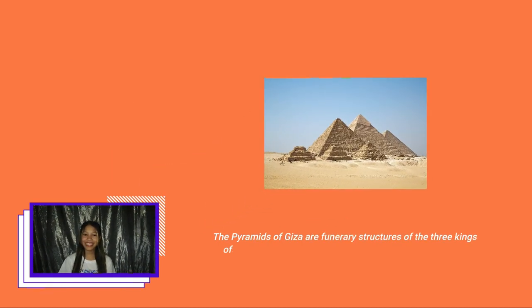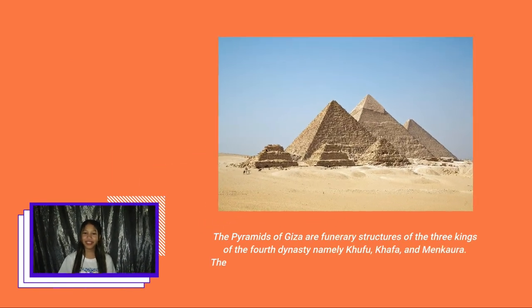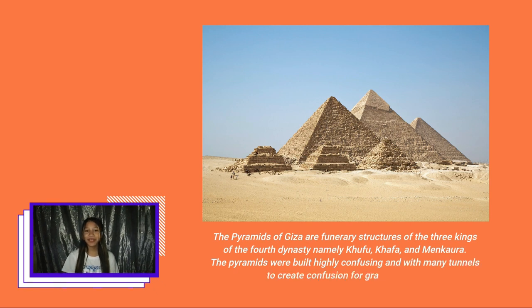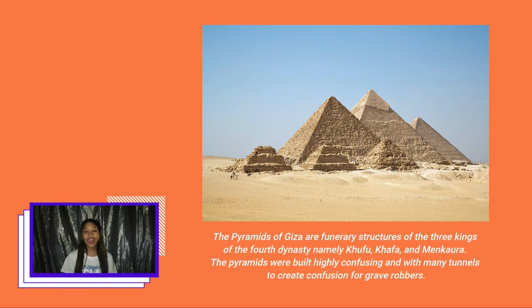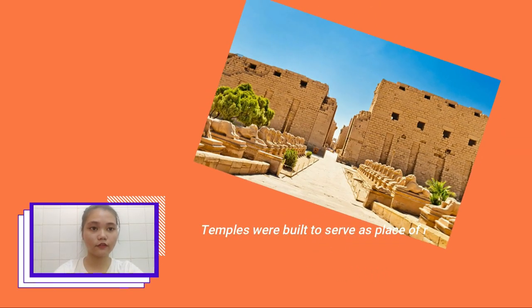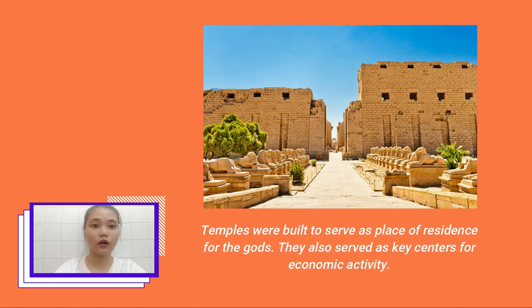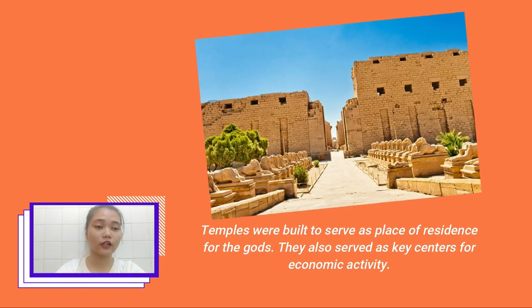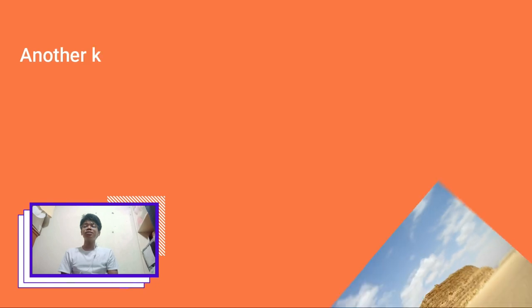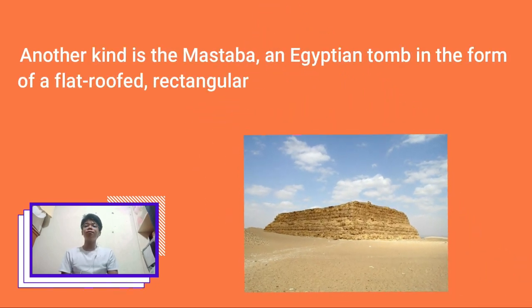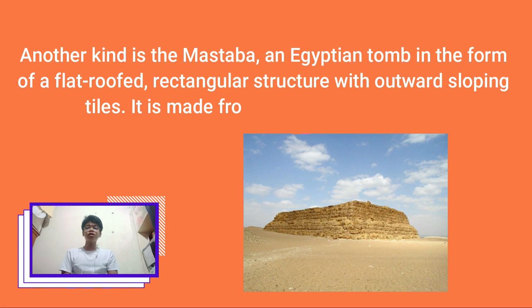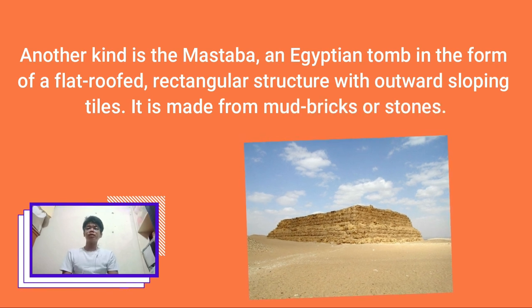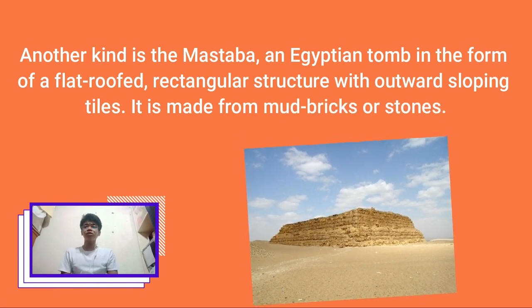The Pyramids of Giza are funerary structures of the three kings of the 4th Dynasty, namely Khufu, Khafre, and Menkaure. The pyramids were built with many tunnels to create confusion for grave robbers. Temples were built to serve as places of residence for the gods and as key centers for economic activity. The other kind is the mastaba — an Egyptian tomb in the form of a flat-roofed, rectangular structure with outward sloping sides, made from mud bricks or stones.